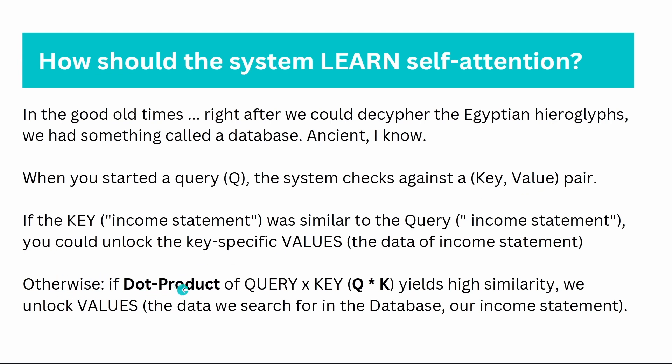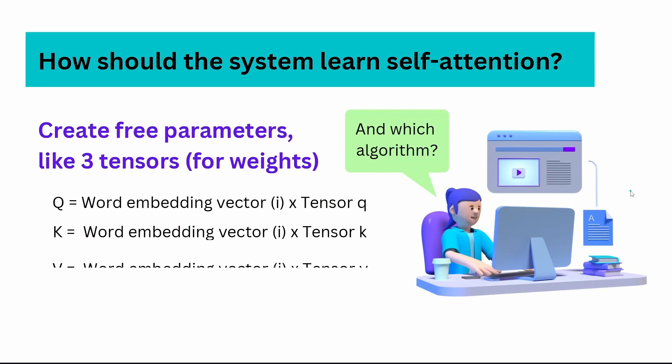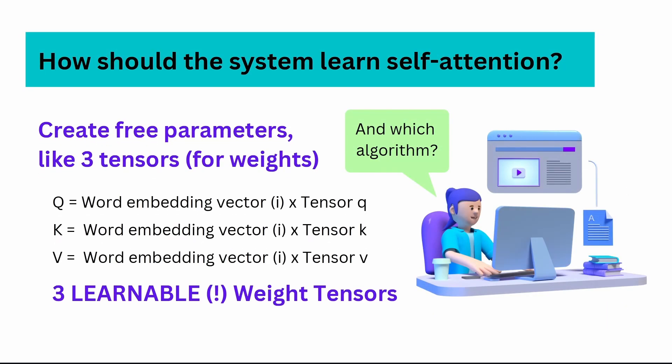Dot product is about similarity. If the dot product of the query times the key, q times k, yields a high similarity, we could unlock the values, the data we searched for in the database. In particular, our income statement. So remember, dot product q times k. From this time, there's the convention and the kind of algorithm.